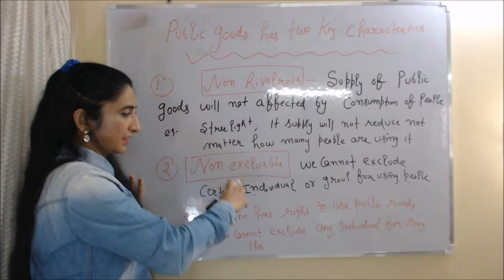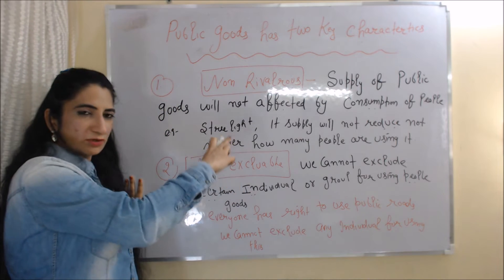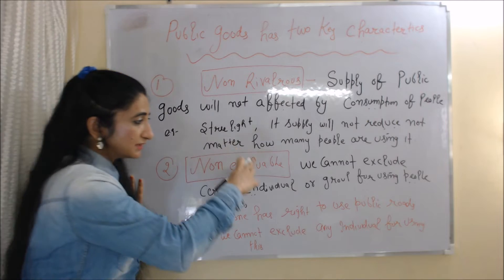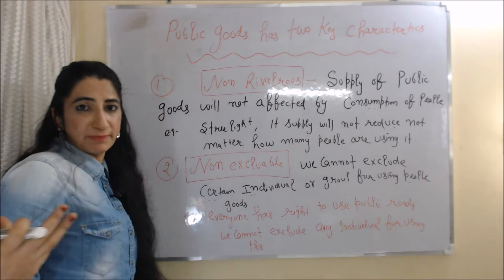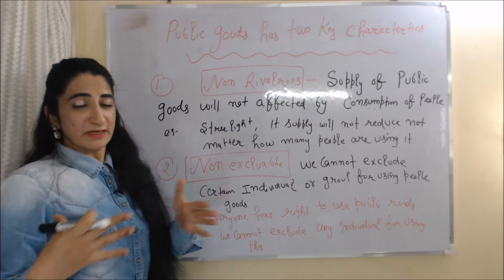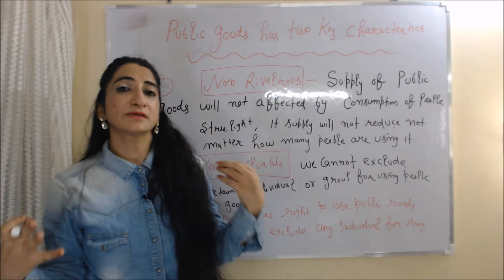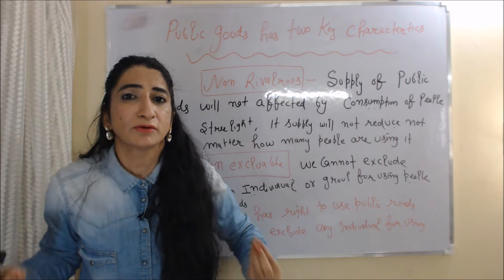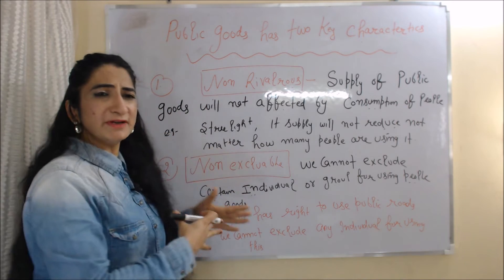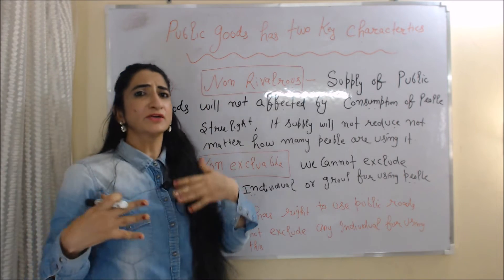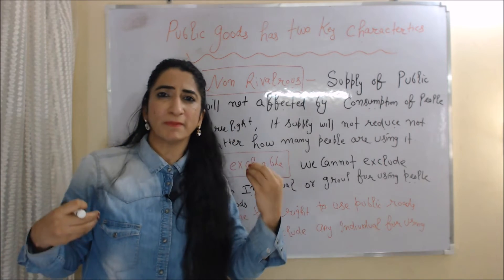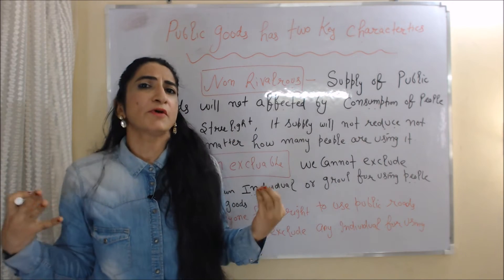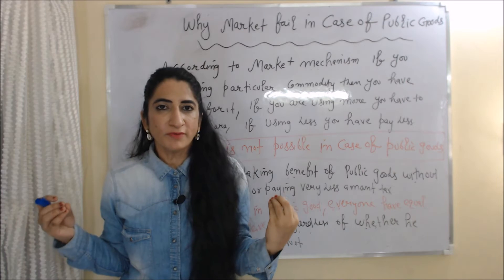Non-excludable means we cannot exclude certain individuals or groups from using public goods. For example, everyone has a right to use public parks or public roads — we cannot exclude any individual from using them.